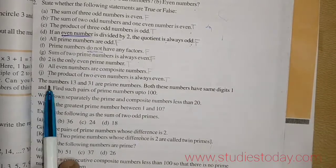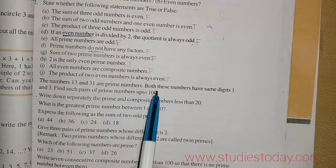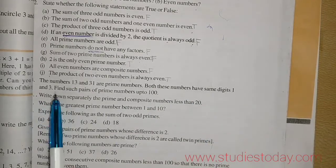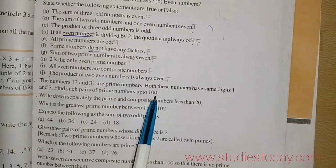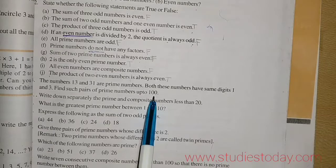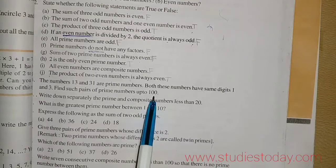The numbers 13 and 31 are prime numbers. Both these numbers have same digits 1 and 3. Find such pairs of prime numbers up to 100. So one method can be that you make a sieve of Eratosthenes and then you find it. And the second is you can rely on your memory which I will be doing and I will be finding some numbers like that.